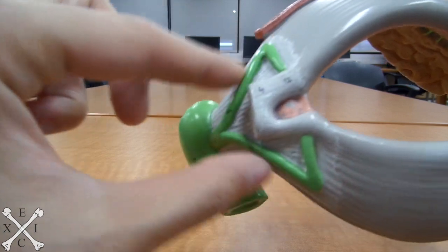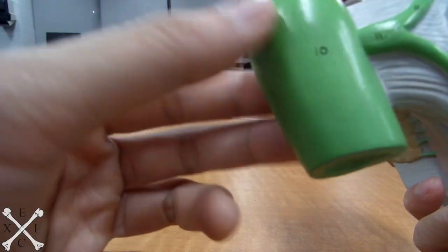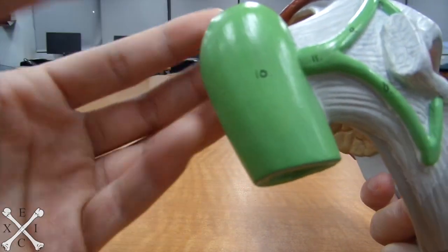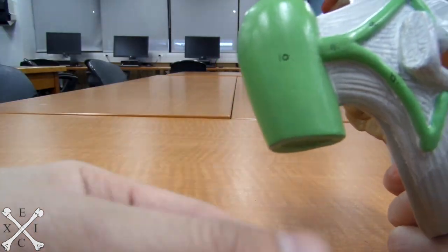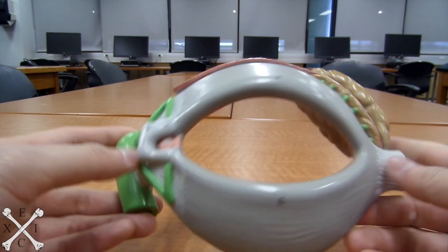The lacrimal canaliculus goes into what we call the lacrimal sac, which is this structure here. And the lacrimal sac would have everything secreted into the nasal lacrimal duct, which is not really visible on this apparatus.